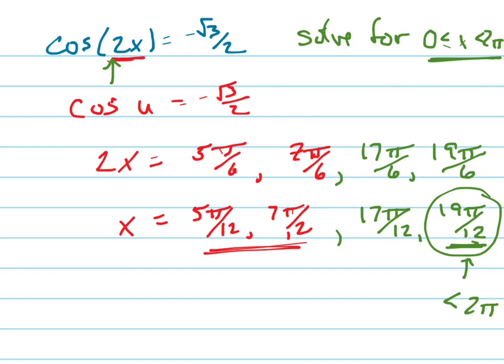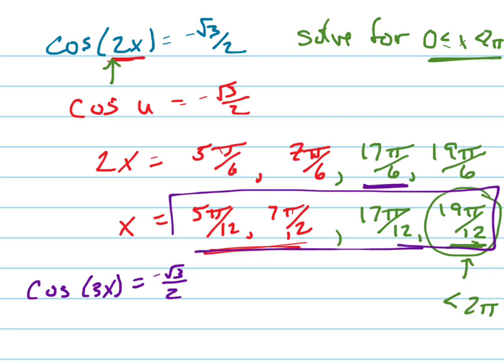What if it said the cosine of 3x equals negative root 3 over 2? Then I'd need to go around the circle another time. So add another. I would have the same four solutions right here, but then I'd also have two more solutions, because I'd have to go around a third time.